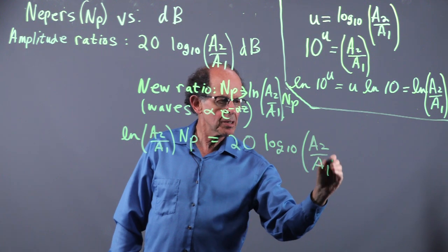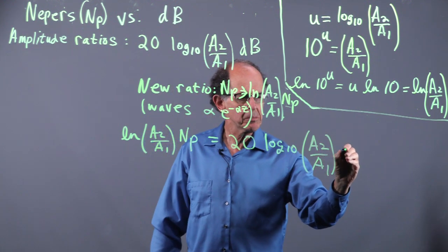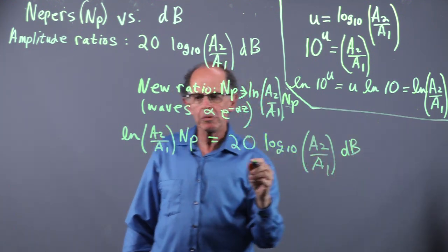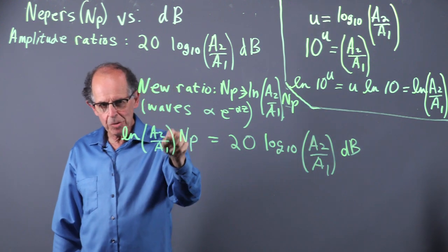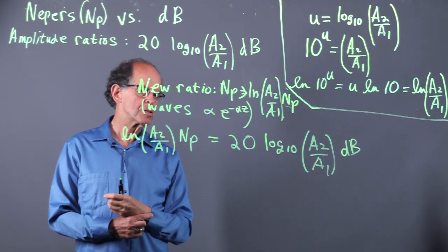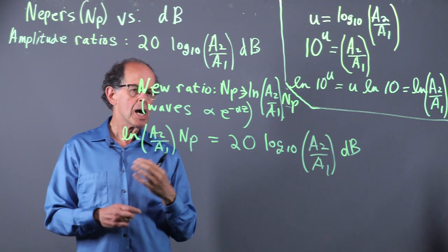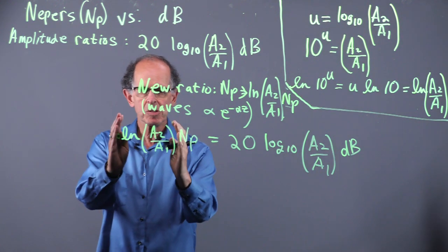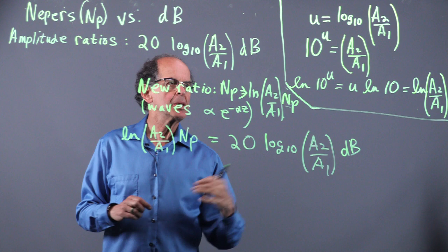When we do logs here, we must always remember that we are using the ratio, so always have those brackets. So the question is, one NIPR, so if this is equal to one, is how many dB?